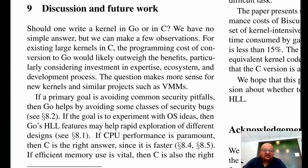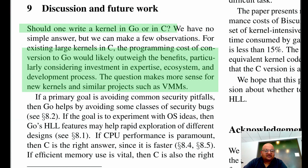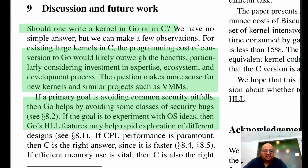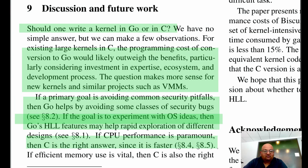So where does this leave us? Should we be writing kernels in Go or in C? For existing kernels like Linux, which already have a huge code base, this probably does not make sense. But it becomes more of a possibility for new kernels or new virtual machine monitors. Writing in a high-level language like Go avoids the most common security issues seen with kernels written in C. Also, because of the high-level nature of the language, it's easier to experiment with OS ideas and iterate quickly. However, if CPU performance is the most important factor, then C is faster. That was a look at Biscuit, an OS kernel written completely in Go.